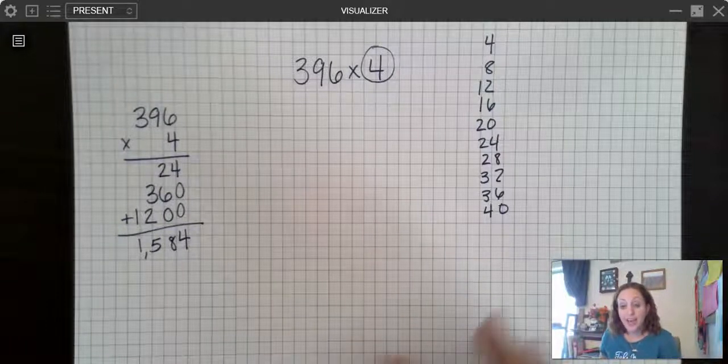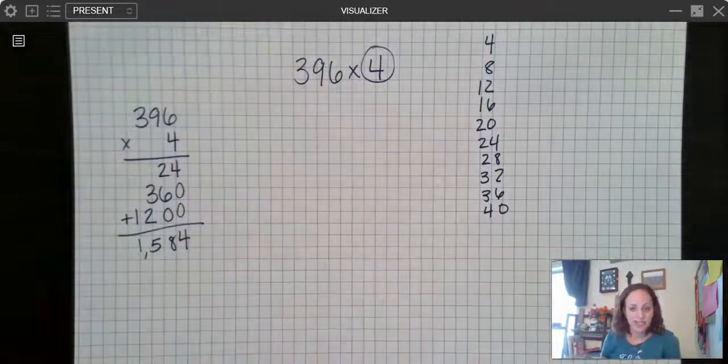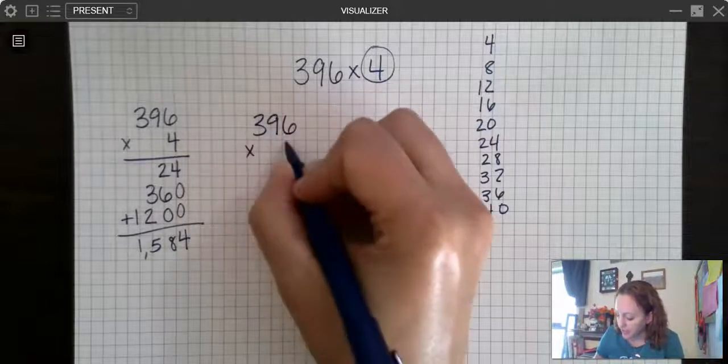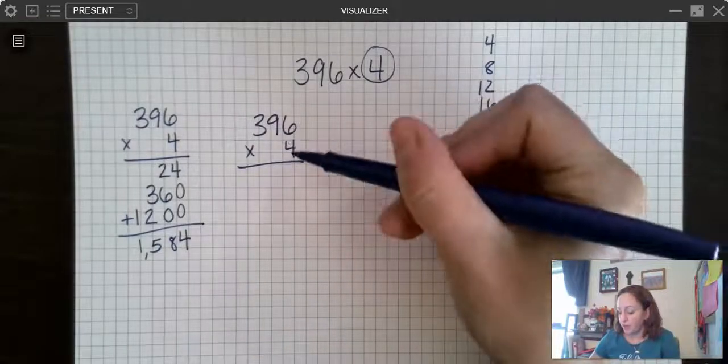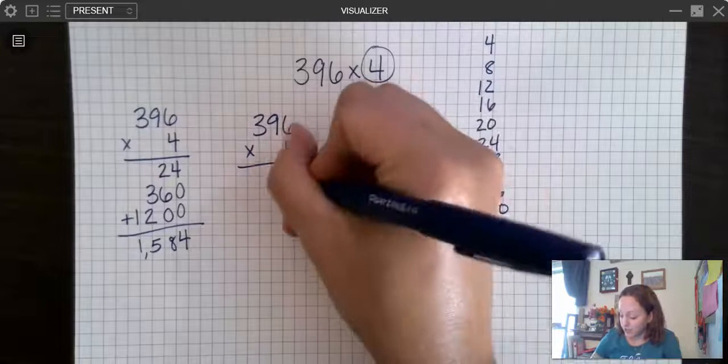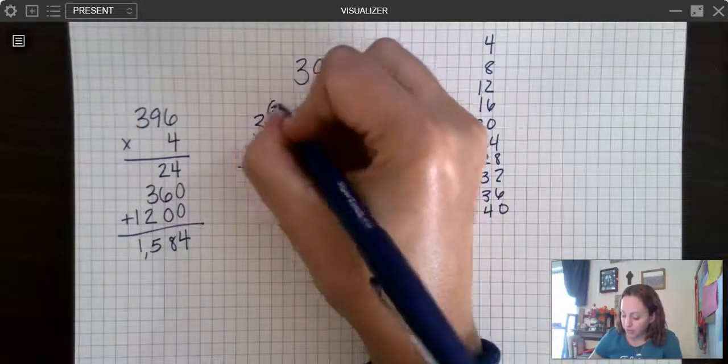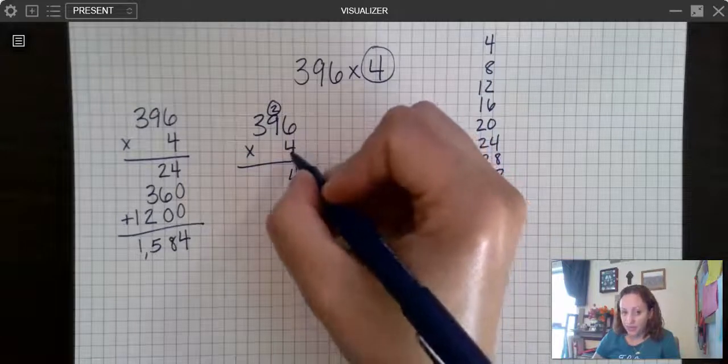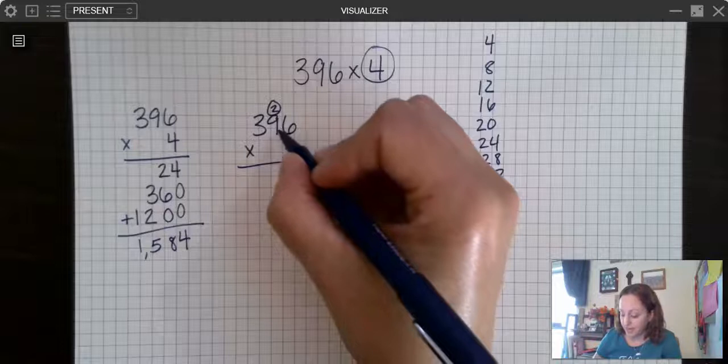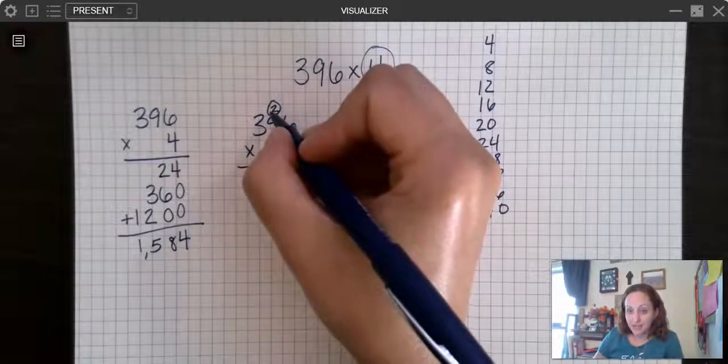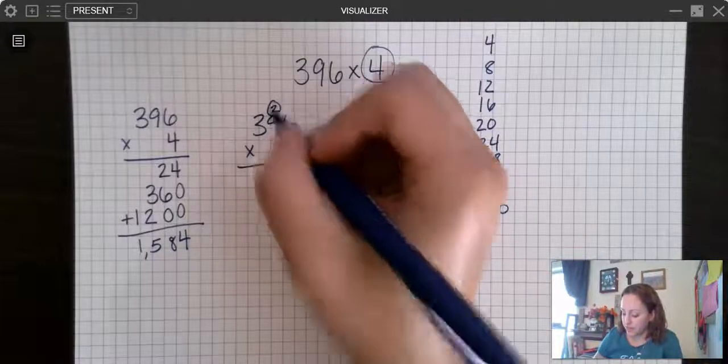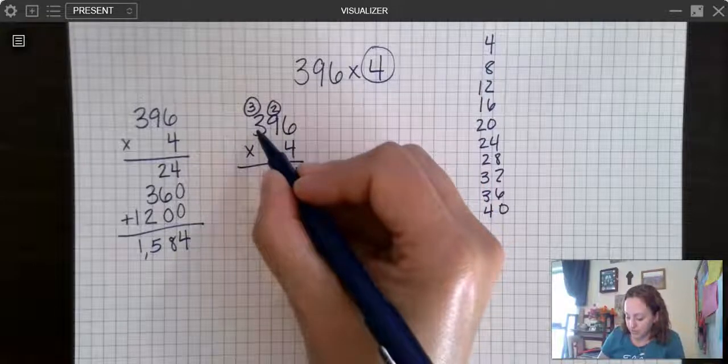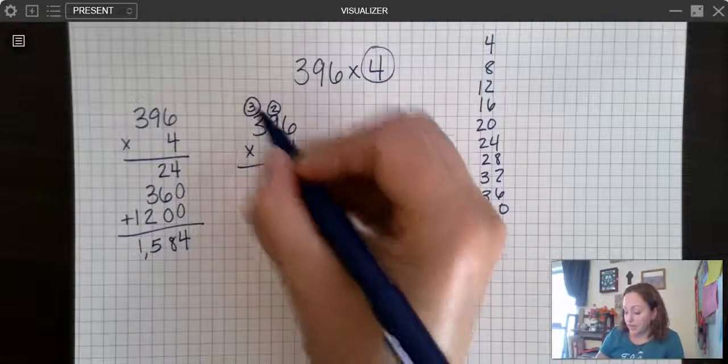Now, I wanted to show you how the partial product strategy relates to the standard algorithm. So you can see that you're actually doing the exact same thing. It just looks a little different. So we have 396 times four. Let's do this the standard algorithm way. So I'm going to do the same thing. Four times six is 24. So here I'm going to write my ones place and regroup my tens place. So four times six is 24. Now I'm going to do four times nine. Four times nine is 36. And I have to add in what I regroup. So four times nine is 36, 37, 38. So write my eight, regroup my three. And now I do four times three. Four times three is 12. And I have to add this three in.